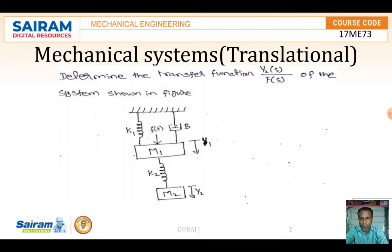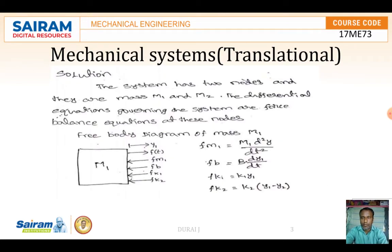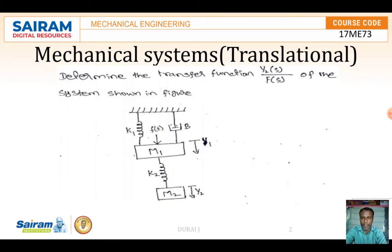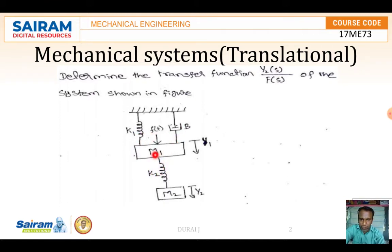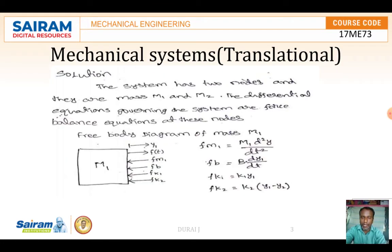To solve this problem, we are first going to take the free body diagram of M1 and M2. For M1, the displacement causes Y1. The external forces acting on M1 are F(t), and the resisting forces are K1, B, K2, and the inertial force of M1.